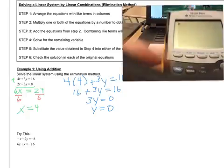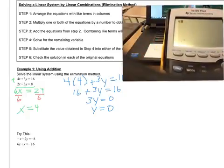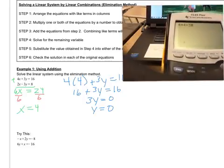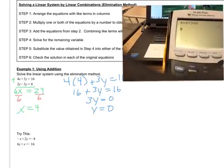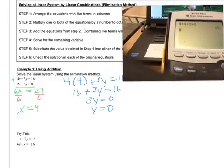On the calculator, you would type in 4 times 4 plus 3 times 0, and hit enter. As you can see, you get 16, which is what we wanted, so we know it works in the first equation.